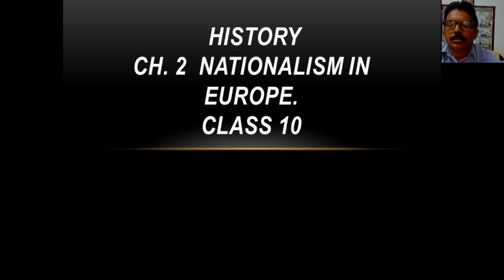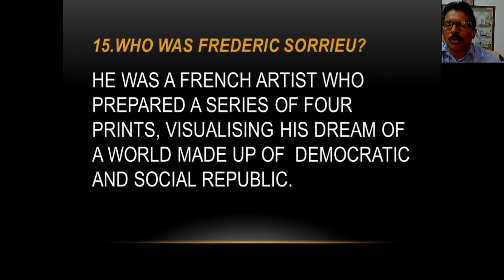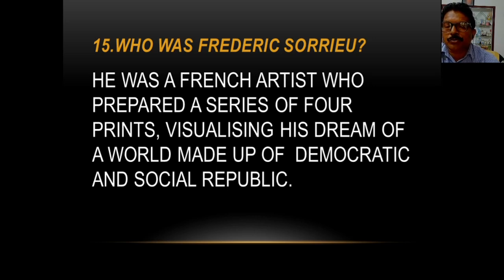Let us begin our class with the French artist Frédéric Souriau, and find out what was his vision of the world. He was a French artist who prepared a series of four prints visualizing his dream of a world made up of democratic and social republics. In the beginning of the chapter you can see a picture of a Statue of Liberty, with countries like America, Switzerland, France, Germany, Poland, Italy and Ireland all paying homage to the Statue of Liberty.